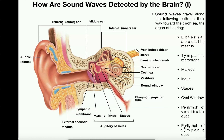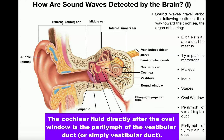The exact nature of the vestibular duct and the tympanic duct we'll cover in the next video. But to understand the path: sound waves move through the external acoustic meatus, vibrate the tympanic membrane, which vibrates the malleus, which vibrates the incus, which vibrates the stapes, and then the vibrations move through the oval window into the fluid of the cochlea.